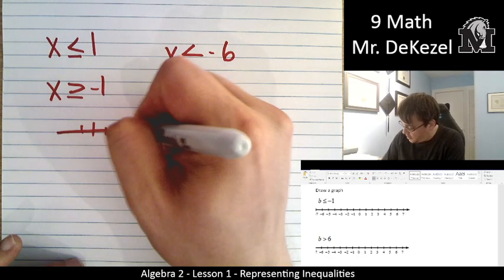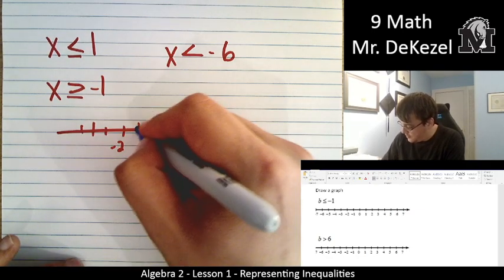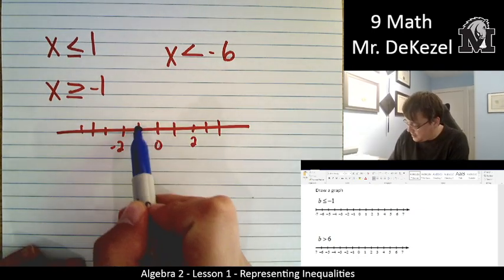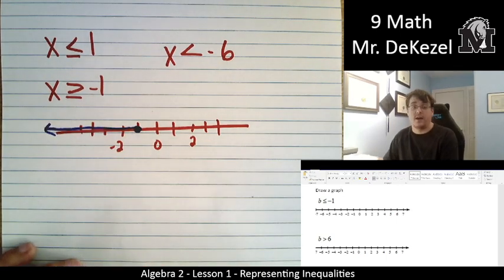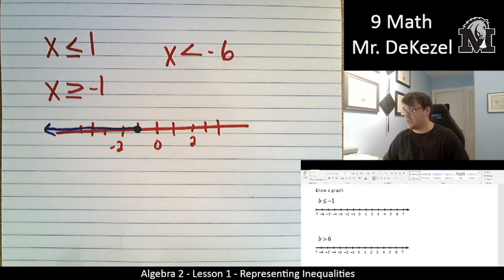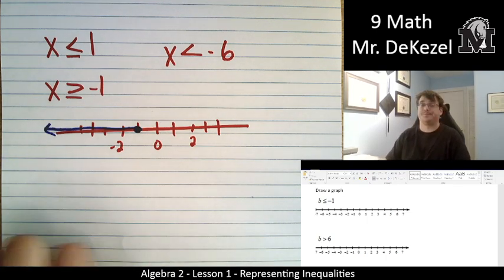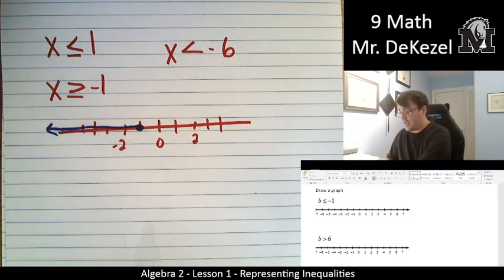So it's a dot that is complete, it is filled in, and it moves along this way. So the first one, b is less than or equal to negative one is represented in this graph right here.